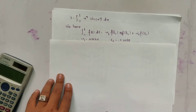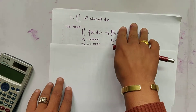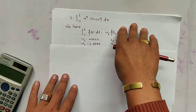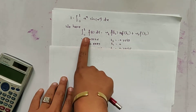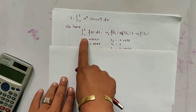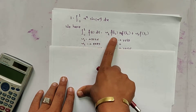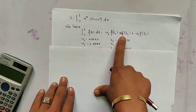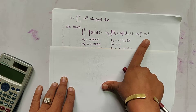For changing the limit, we used the method in the previous video, so please view it if you do not know it. Let us solve it using the Gaussian 3-point form. The formula is: integral from minus 1 to 1 of f(t) dt = w1*f(t1) + w2*f(t2) + w3*f(t3).